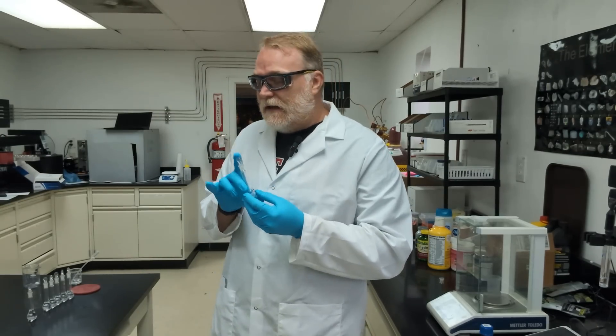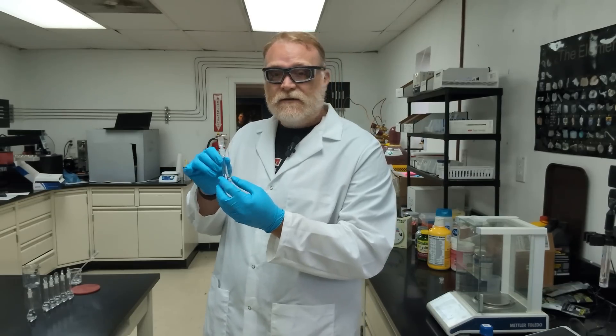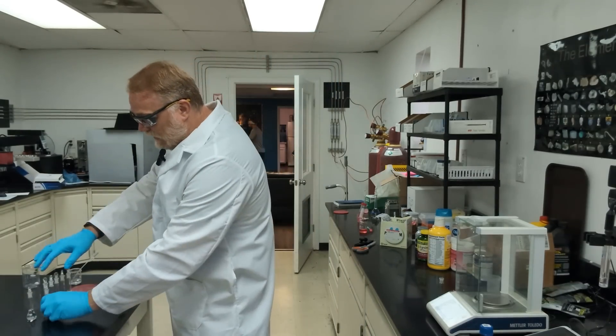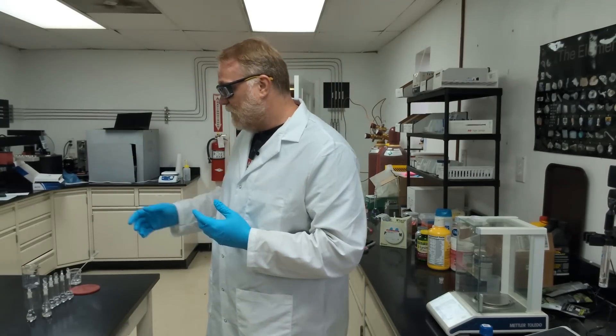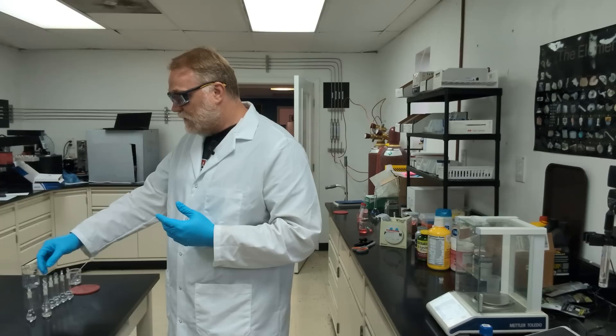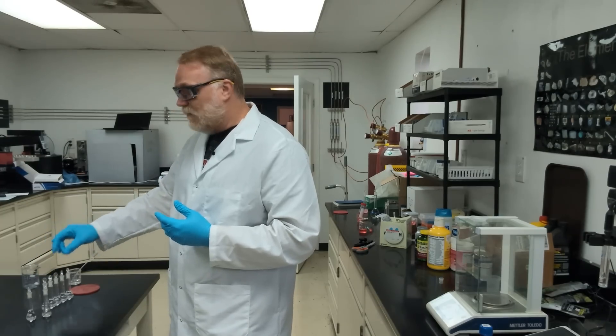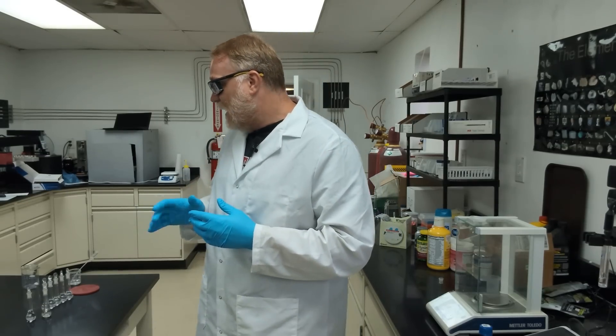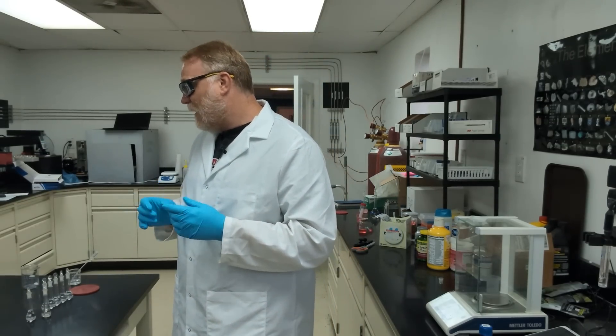Then I'm going to dilute from here into each one of these and produce what's called a standard curve. I'm going to go from 0.2 all the way up to 0.4. Then I have a quality control check which I'm going to do around 0.3, just to make sure that my standards that I've created are reading properly.